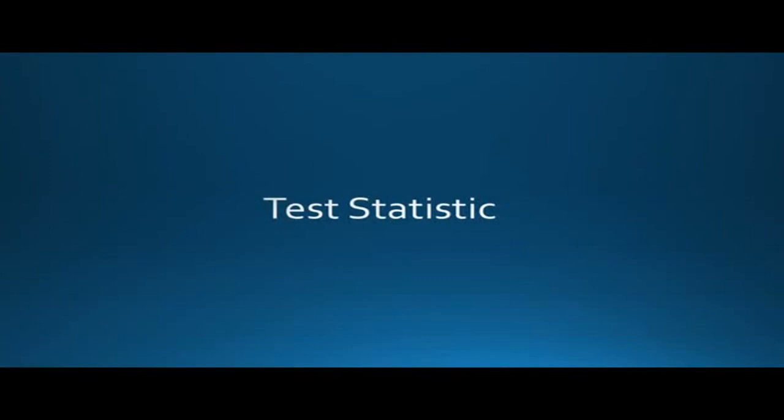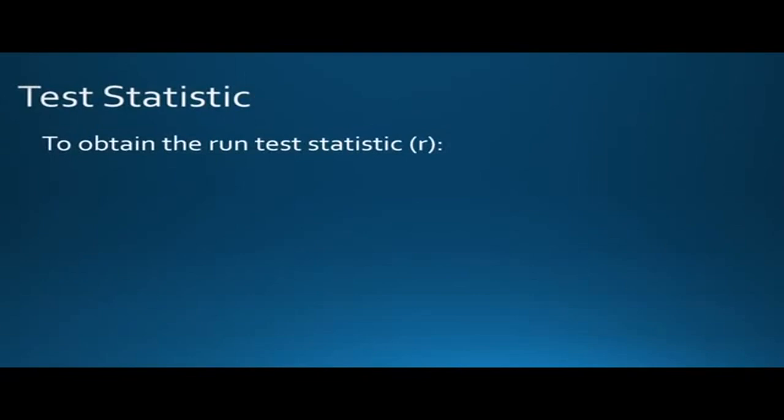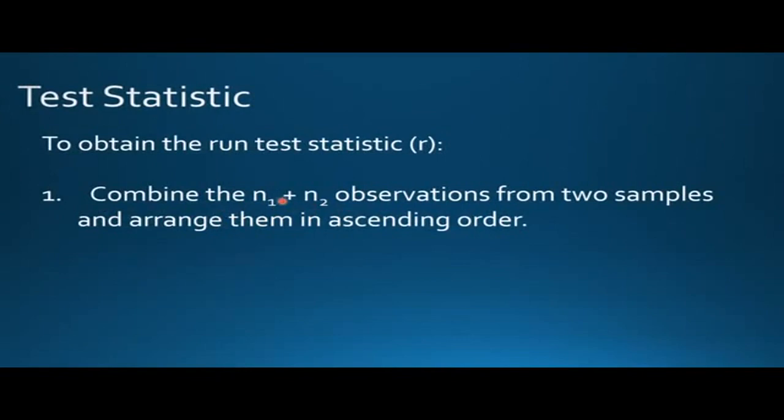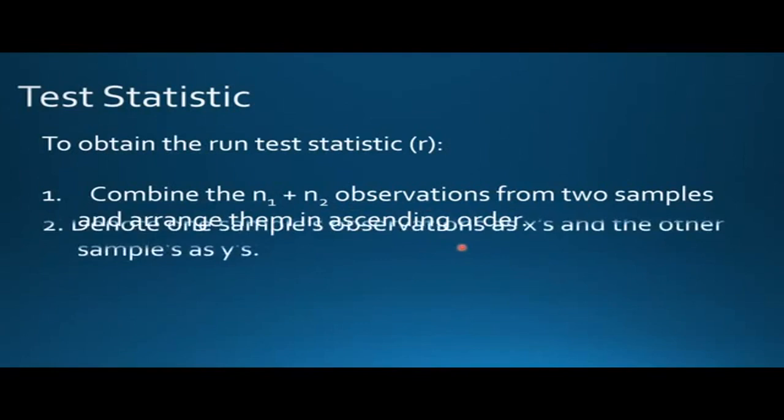Now let's move to test statistic. To obtain the run test statistic r, combine the n1 plus n2 observations from two samples and arrange them in ascending order.